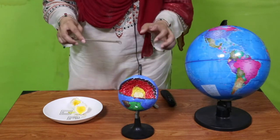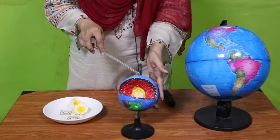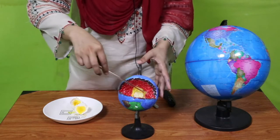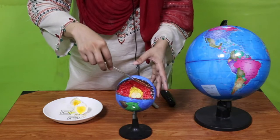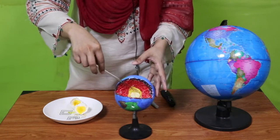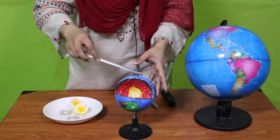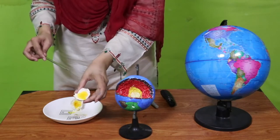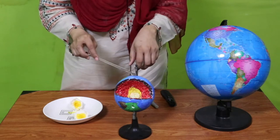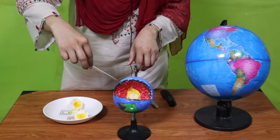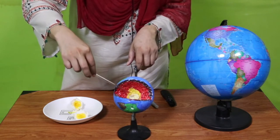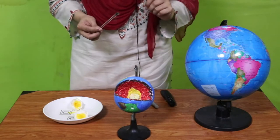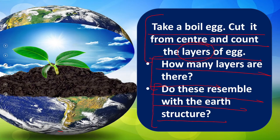Here is a boiled egg and here is the earth. Aapko koi resemblance dikhai de rahi hai ande mein aur earth mein? So when I cut it in half, aapko kuch layers nazar aati hain. Sab se pehle shell aata hai, then comes the white part, and then comes the yolk. So how many layers? One, two, and three. Three layers. Now, do these resemble with the earth structure? Yes, they do.